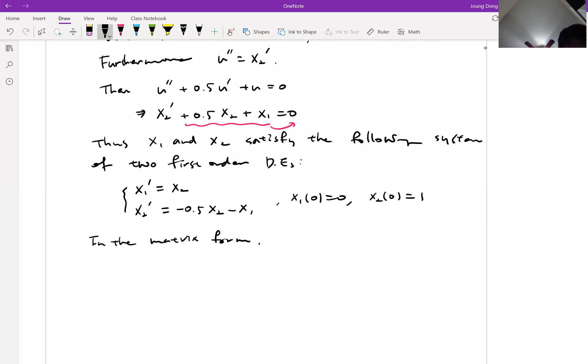it can be written as x1 prime, x2 prime equals, since there's no x1 term in the first equation, 0 and 1, and negative 1 and negative 0.5, times x1 and x2. So we can write it this way.